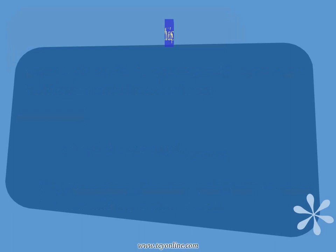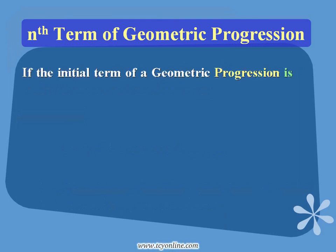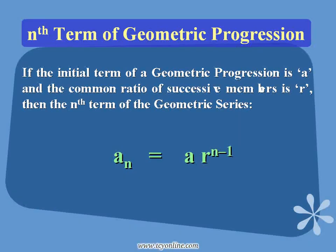Now see how to find the n-th term of a geometric series or geometric progression. If the initial term of a geometric progression is a and the common ratio of successive members is r, then the n-th term of the geometric series is: a_n equals a times r raised to the power n minus 1, where a is the initial term, r is the common ratio, and n is the n-th term.